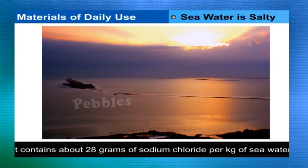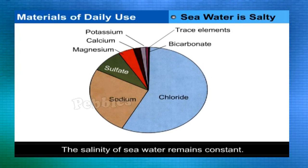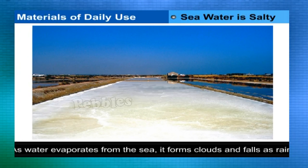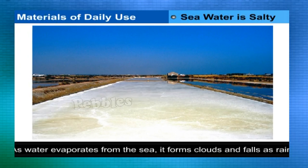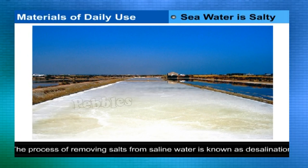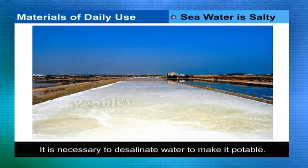Because of its high sodium chloride content, sea water is a very good source of table salt. The salinity of sea water remains constant: as water evaporates and falls as rain, the rain dissolves more salts and minerals on land and brings them to the sea through rivers, compensating the salt removed from the sea.